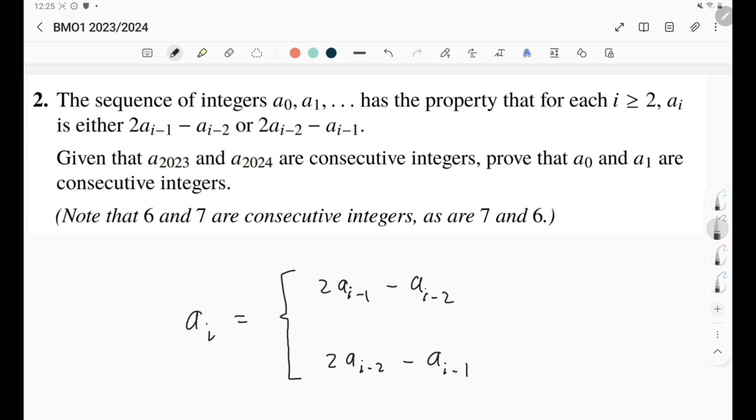Now they are telling us that a_2023 and a_2024 are consecutive integers, and we need to prove that a_0 and a_1 are consecutive as well. So what we know is that a_2023 and a_2024 are consecutive, and we need somehow to go down to reach a_0 and a_1 and show that these are consecutive as well. Let's see what we can do.